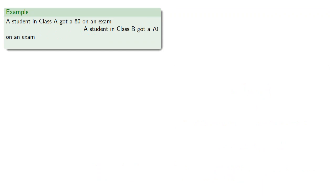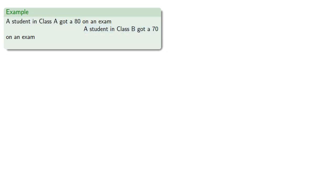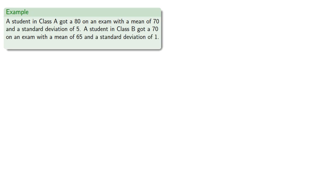Chebyshev's theorem also allows us to compare scores that come from different populations. Suppose one student gets an 80 and another student gets a 70. Getting the higher grade might not mean a lot if the class is easier. Say the mean of the first class is 70 and the mean of the second class is 65, with standard deviations of 5 and 1 respectively. Now we can ask which student did better relative to their class.